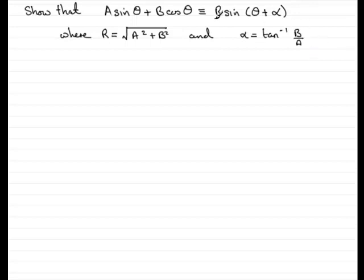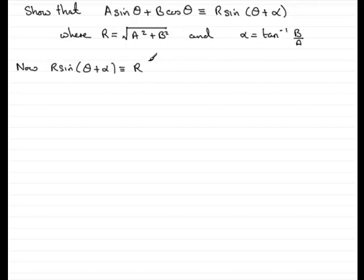In order to do this, I'm going to take the right-hand side and show you that it's identical to the left-hand side. We'll start by saying that r sin(θ + α) is identical to r multiplied by the expansion of sin(θ + α). Now, this is not sin θ + sin α — that is a common mistake — but you should know the expansion of the sine of one angle plus another angle.